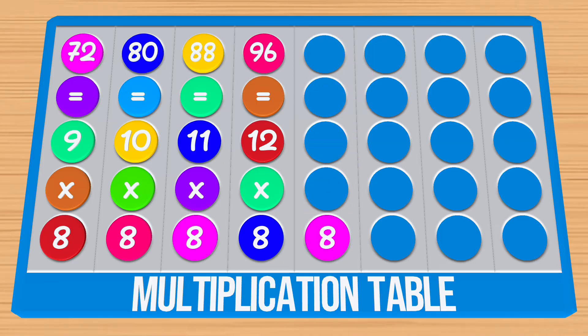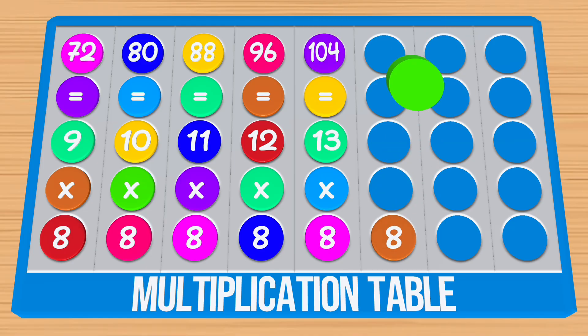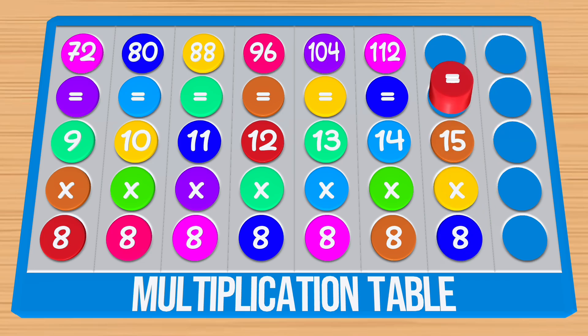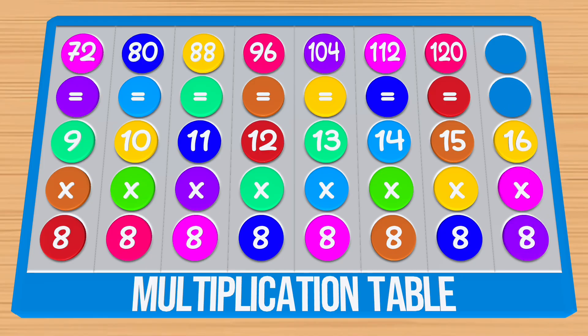8 times 13 is equal to 104. 8 times 14 is equal to 112. 8 times 15 is equal to 120. 8 times 16 is equal to 128.